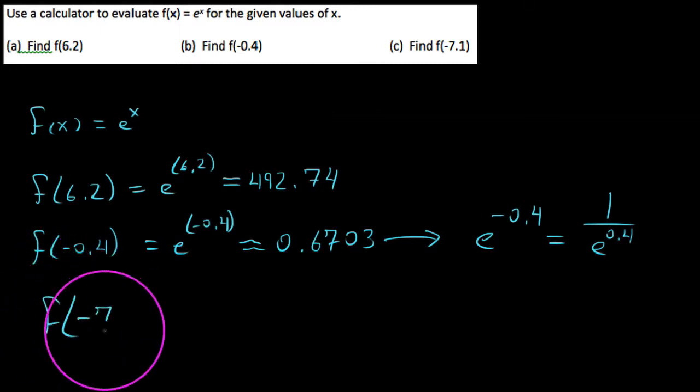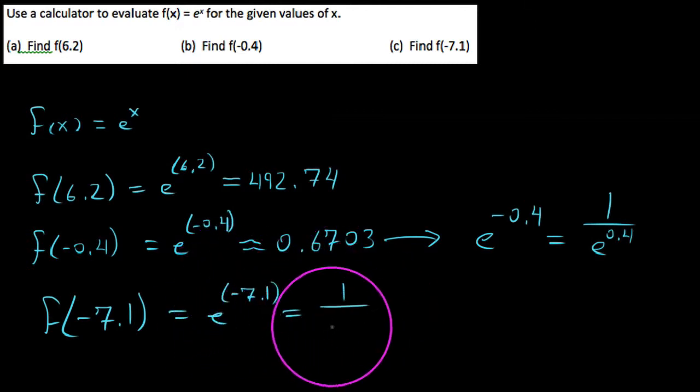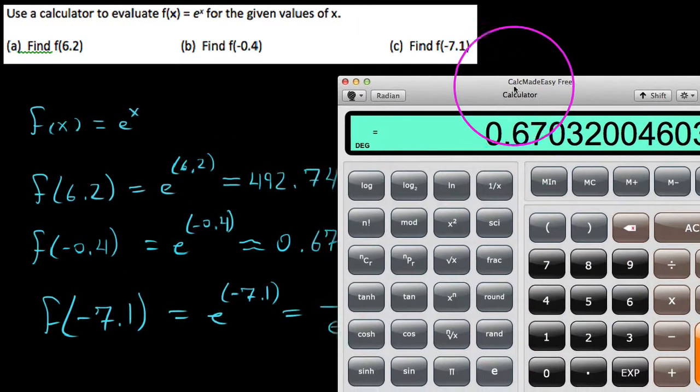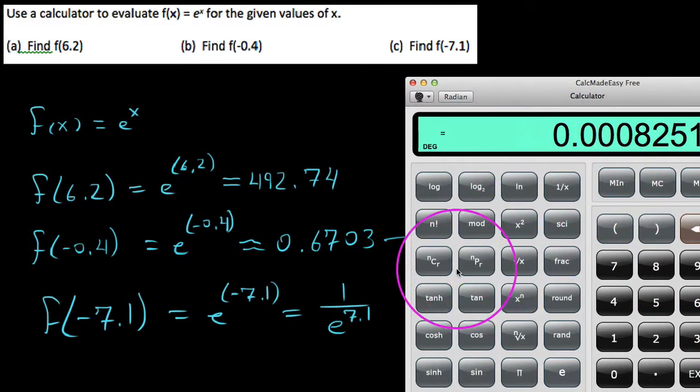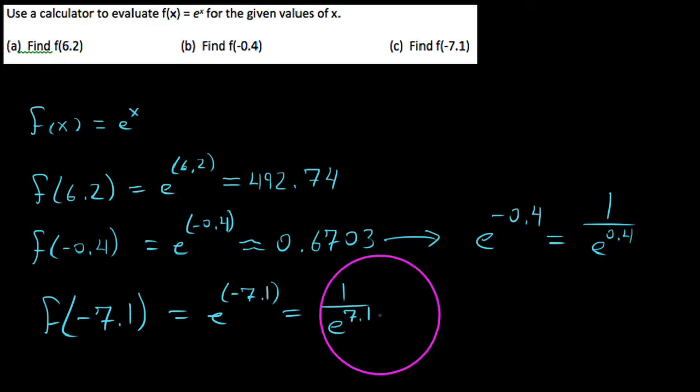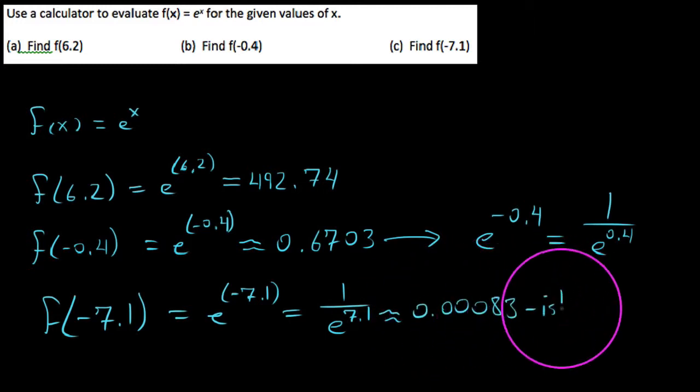And then the last finale, how about F of negative 7.1. Writing this out, we'd say this is E to the negative 7.1, that's the same thing as 1 over E to the positive 7.1. This should be rather small when we do this. I've got E power of 7.1 negative, and we get 0.0008, or 0.00083-ish.